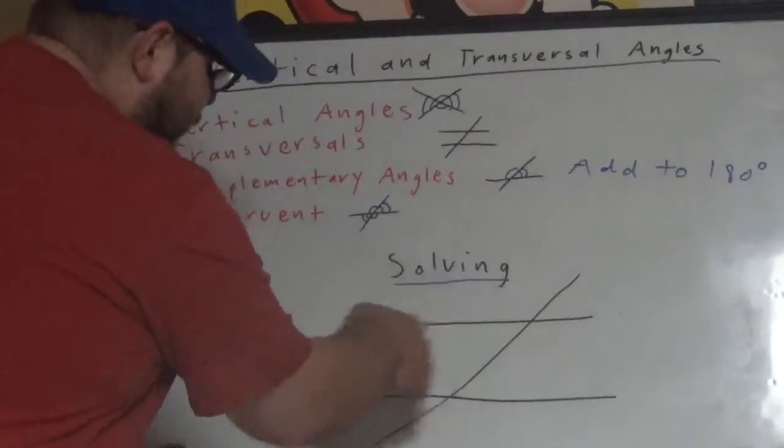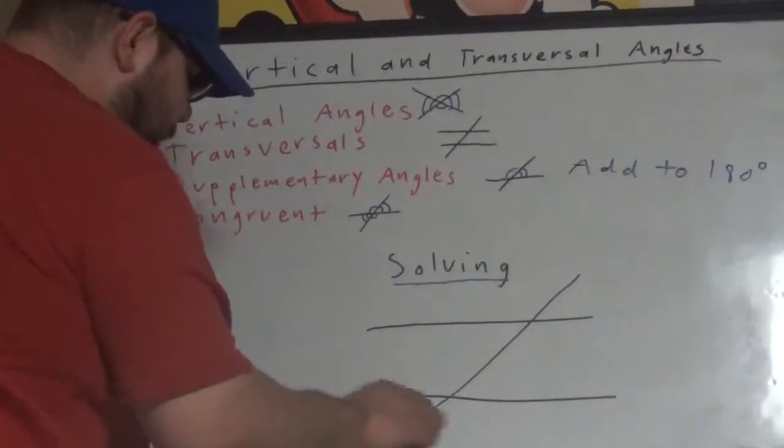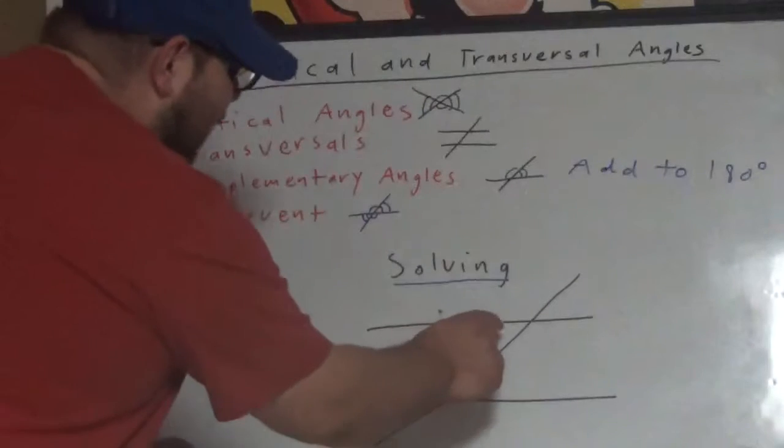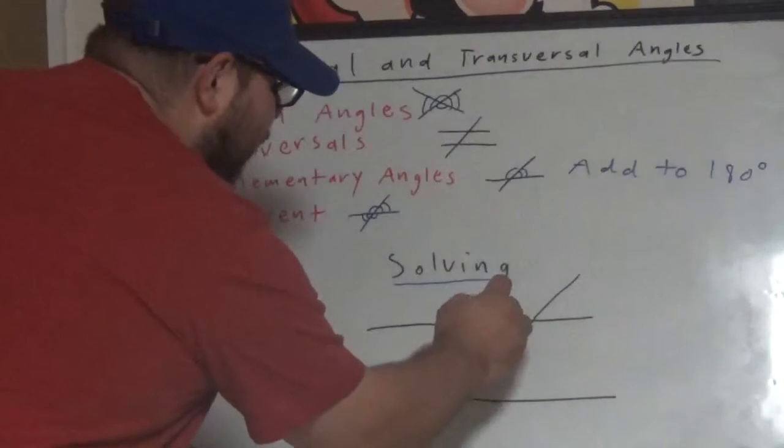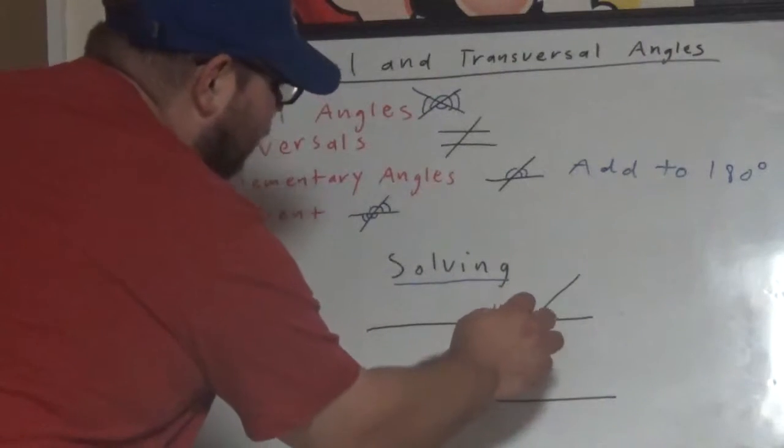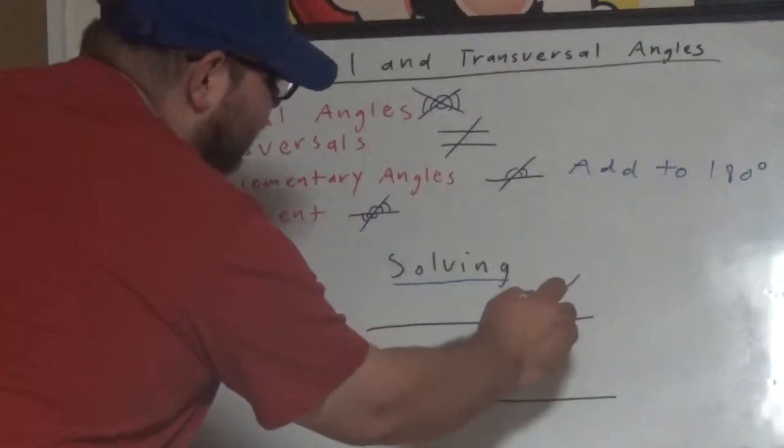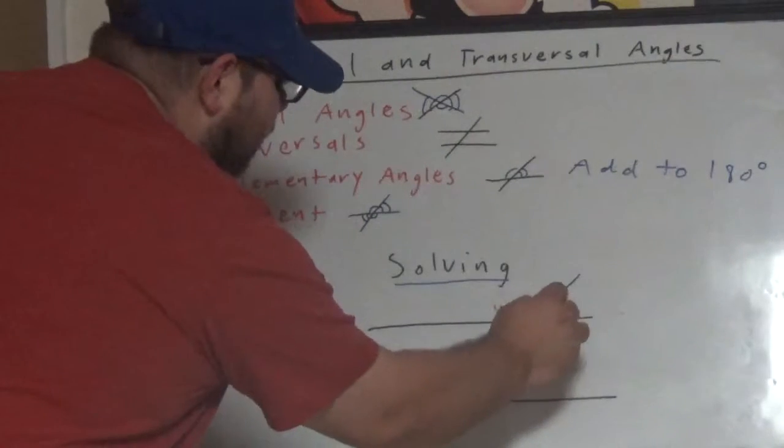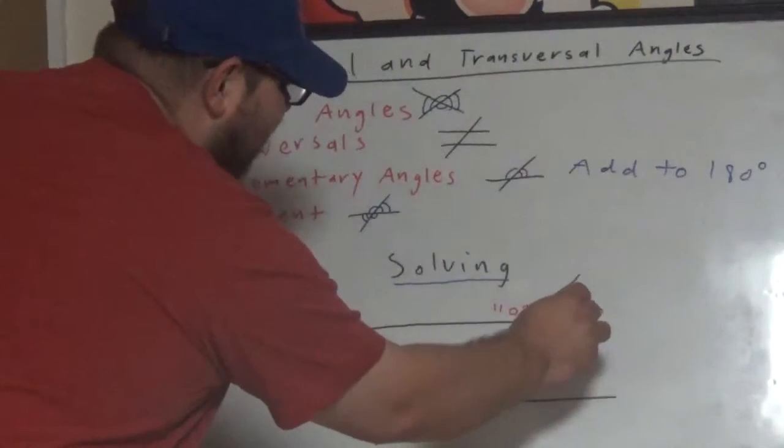I'm going to get to the examples. I'm going to do it in red so it shows up good. I'm going to start by doing an example. Let's say that this is 110 degrees. And this, let's call it x plus 10.